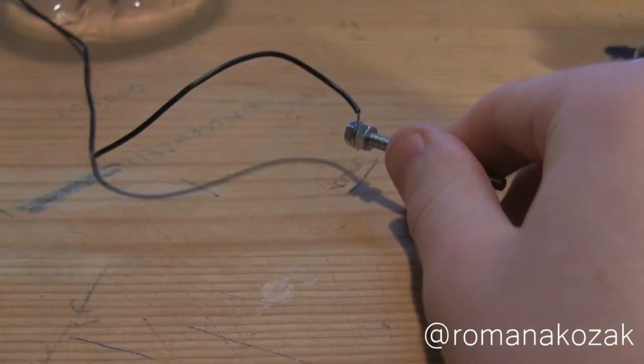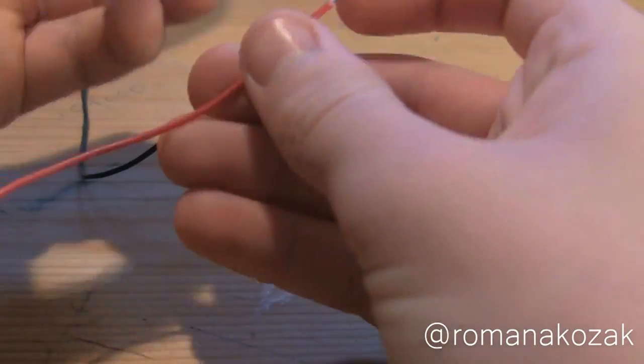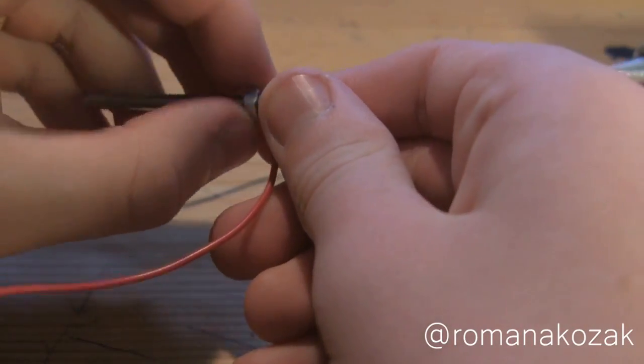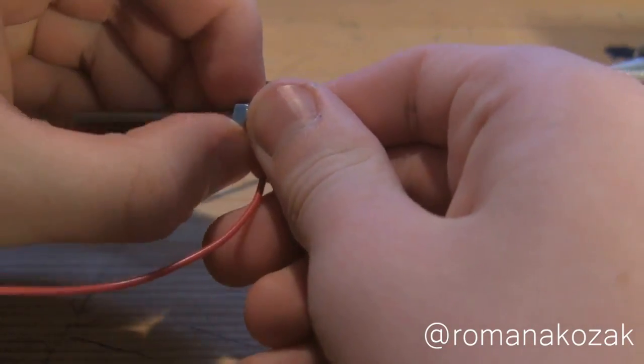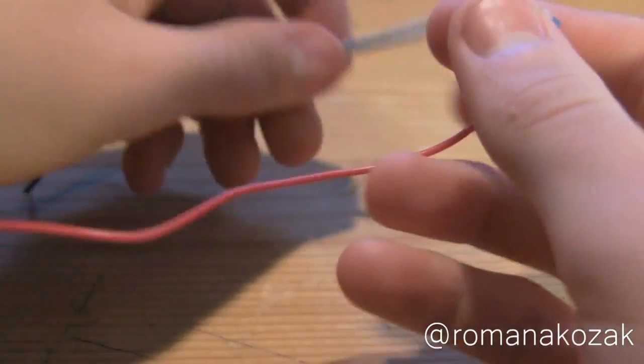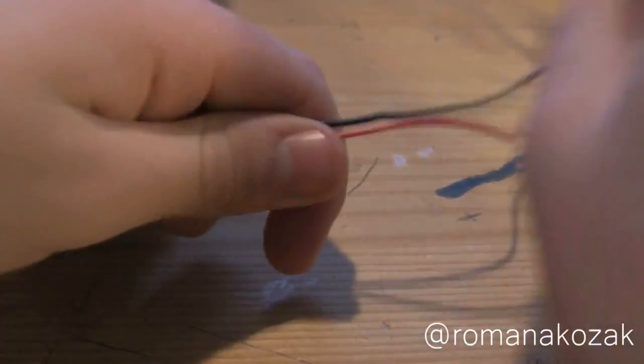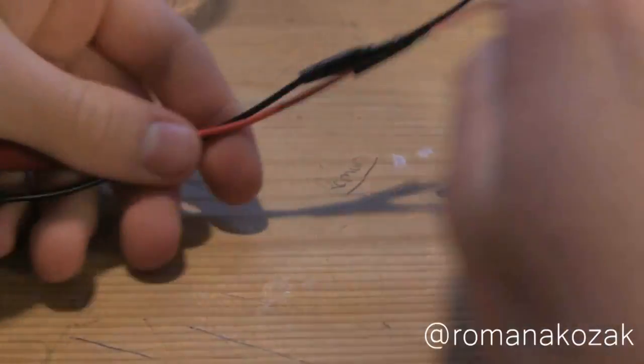Do the same with the red wire, wrapping it around the screw and then tightening the nut to make sure it's secure. These will be our anode and cathode and they will be generating hydrogen and oxygen gas. We will attach these to a battery using alligator clips.